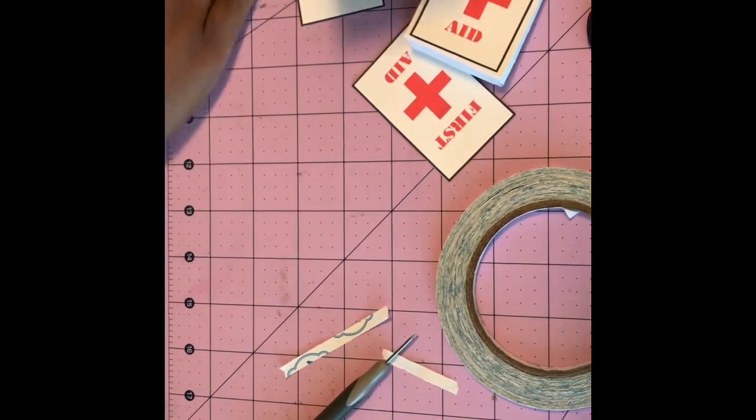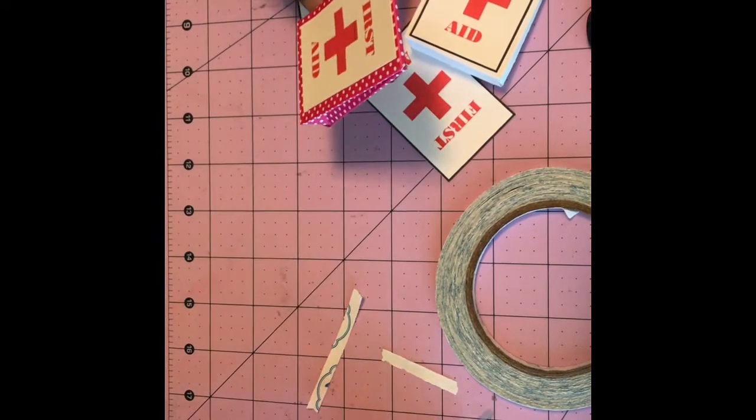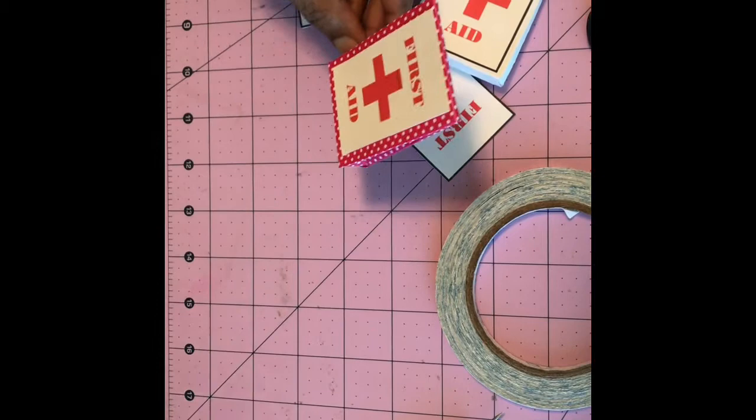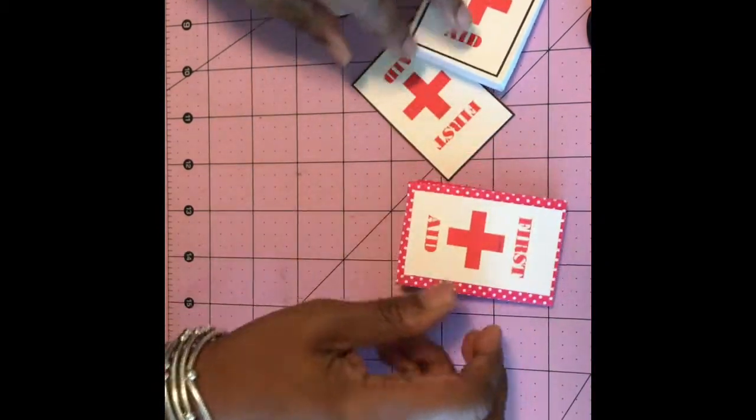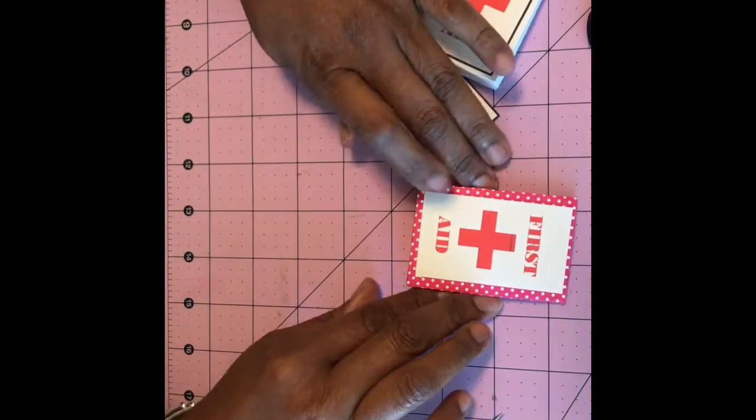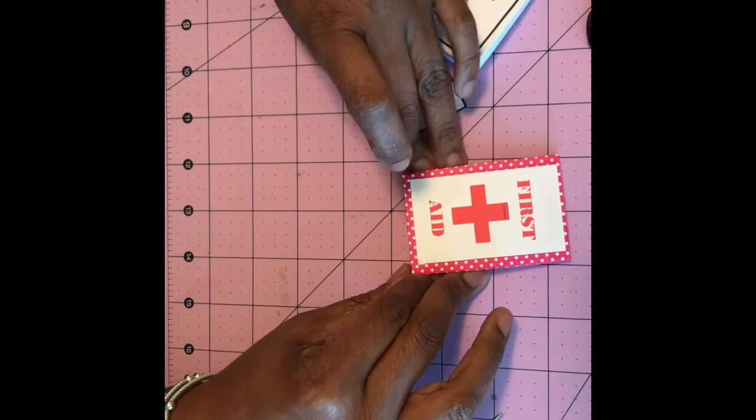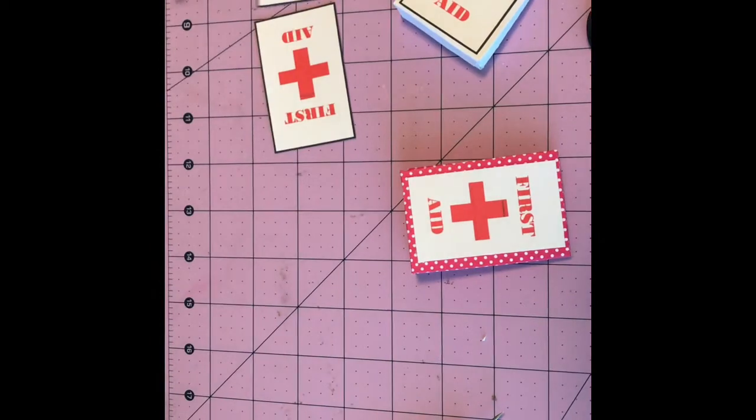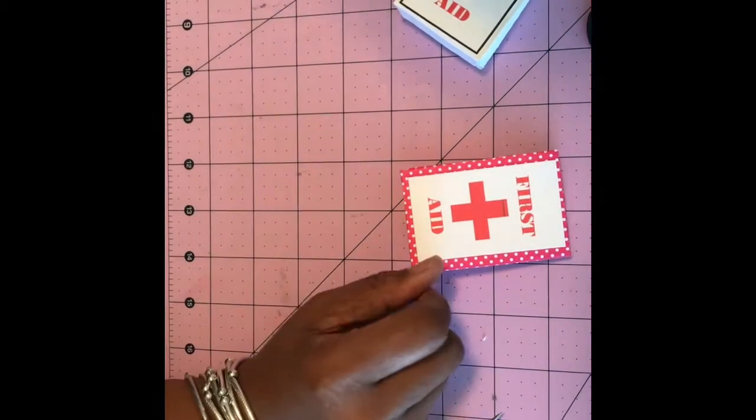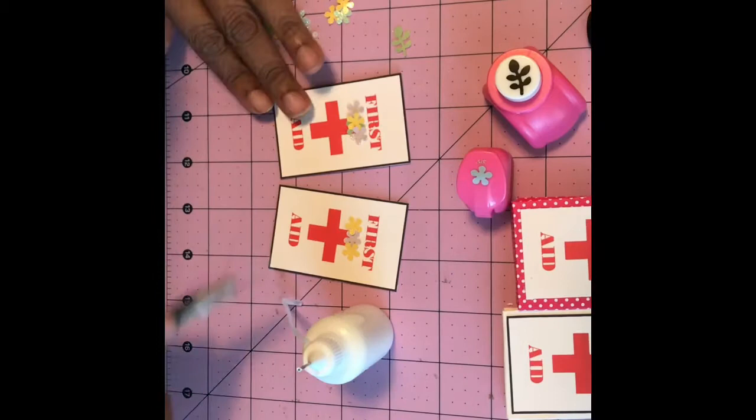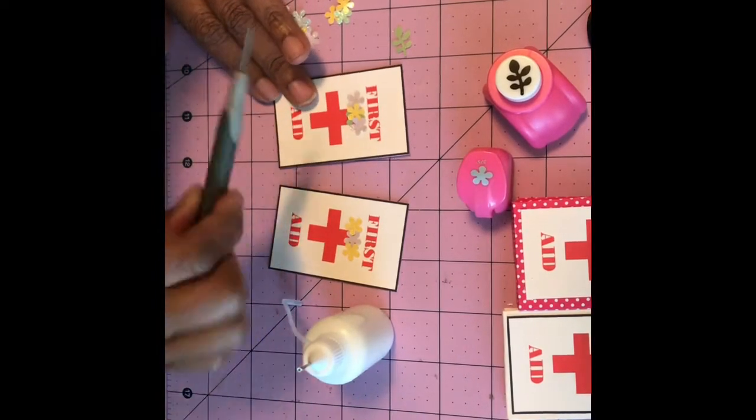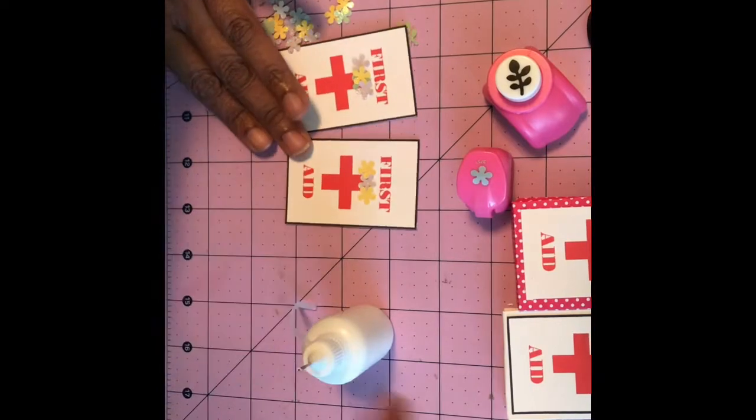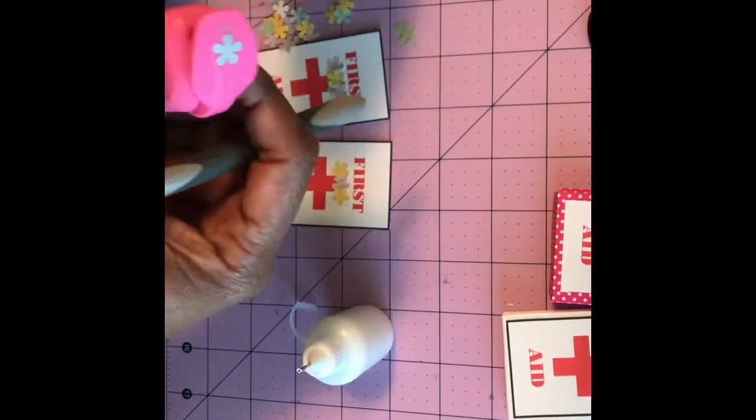What I noticed when I printed out my labels for these bags, my ink for some reason put like a black line at the top of the cross, so I had to come up with a way to cover that line. So I decided to cut these little flowers.